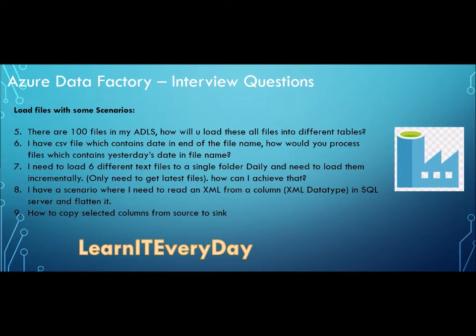I have a CSV file which contains a date in the end of the file name - how would you process files containing yesterday's data? If your file name has a certain pattern, we can utilize that. Most of the time, if files are designed well, they will have some indicator like a timestamp showing which date the file was created. Based on that we can pick the file name, do a substring operation, find out which day's file it is, and use that.